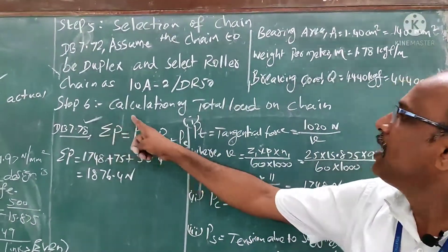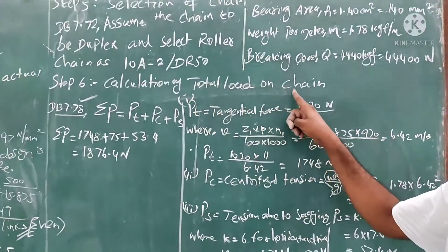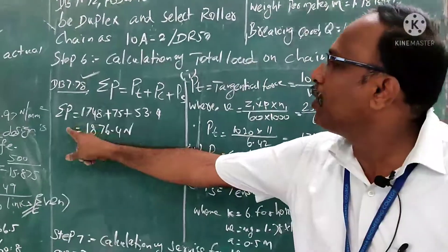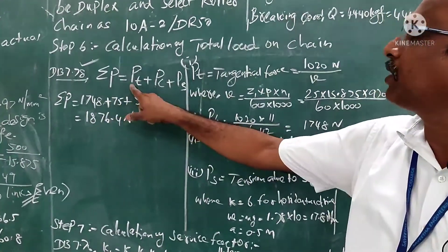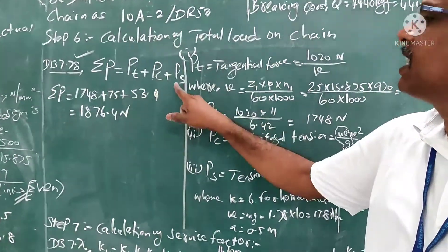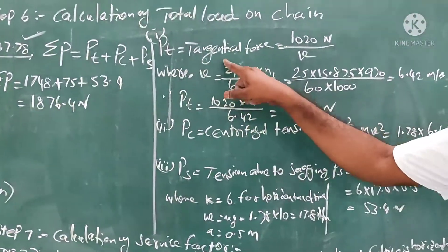Coming into next step: calculation of total load on the chain. From data book 7.78, we have the formula σB = PT + PC + PS, where PT = 1020N/V.